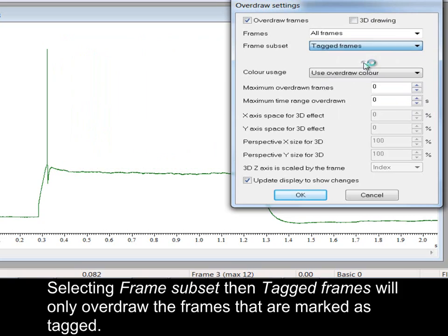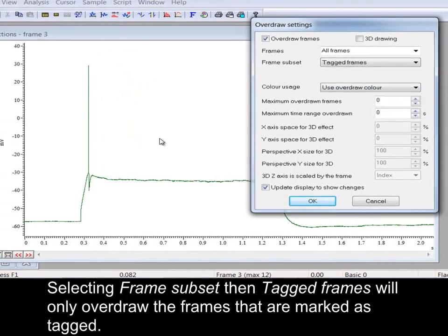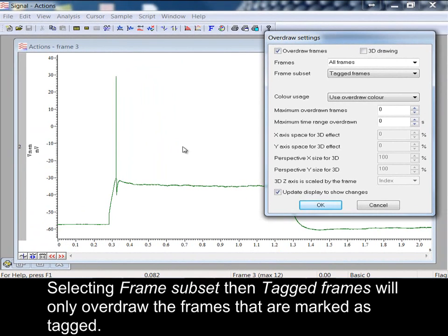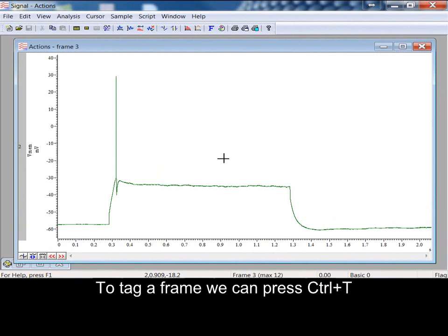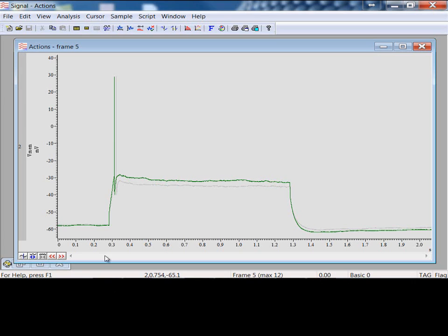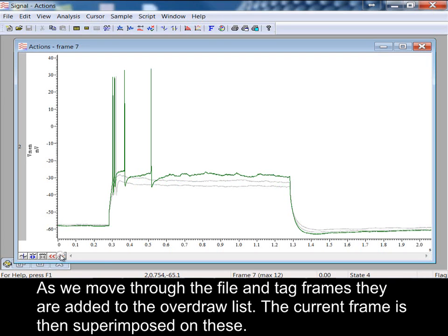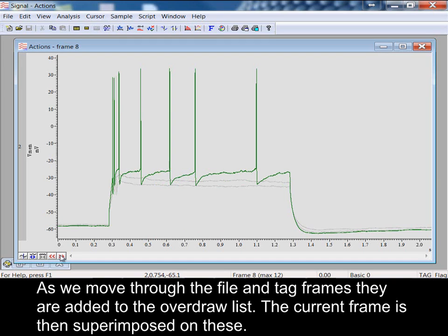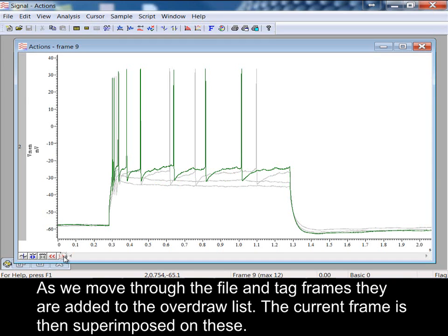Selecting frame subset, then tagged frames, will only overdraw the frames that are marked as tagged. To tag a frame, we can press CTRL and T. As we move through the file and tag frames, they are added to the overdraw list. The current frame is then superimposed on these.